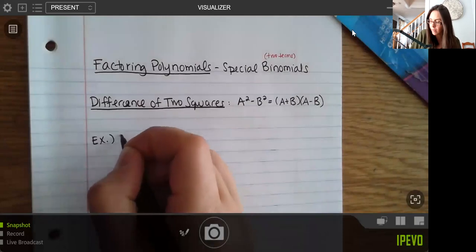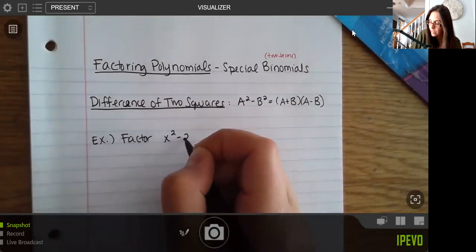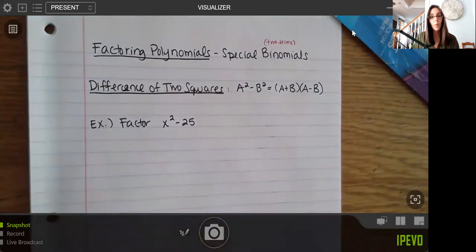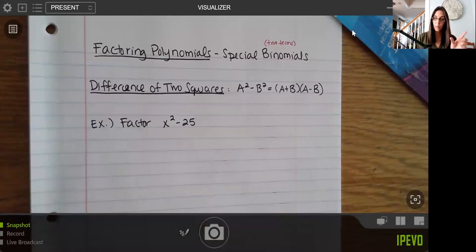For instance, something like factor x squared minus 25. So you want to recognize that this is a special case. It's only two terms, right? Not the three or four that we've kind of been used to seeing. And each of those is a square. X squared is a square, obviously, and then 25 is a square because that's five times five.